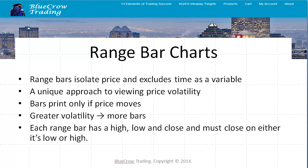Let's move on to range bar charts. Having worked for quite a long time with traditional candlesticks, candlesticks have an open, high, low, and a close. If you're working with a one-minute candlestick, every additional minute there will be an additional candle created. Most traders are familiar with candlesticks based on time. But what range bar charts do, and in particular range bar, is isolate price movement and exclude time as a variable. In a traditional candlestick, there are two variables integrated: first is price movement, and the next is time.